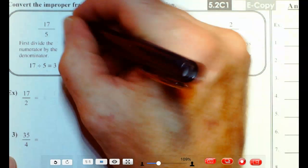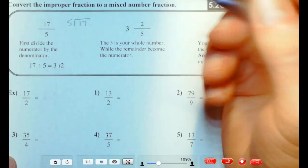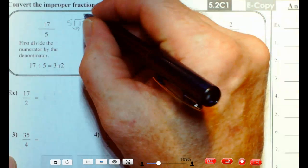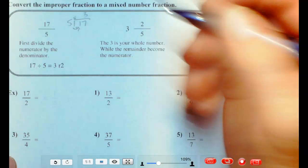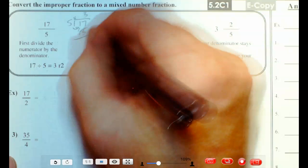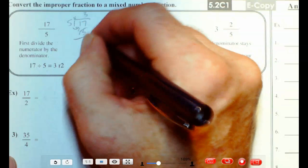you can look at it this way. It's 17 and we're dividing it by 5. Okay, 5 doesn't go into 1. 5 goes into 17 three times. A little time sign there, I like to do that. 5 times 3 is 15.